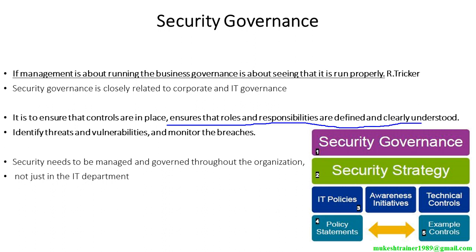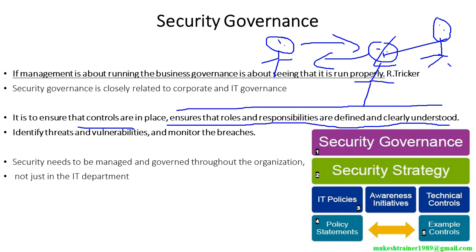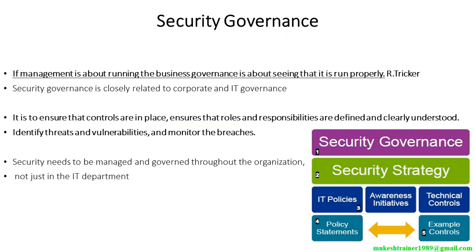In a company, there are people working — say two engineers. If a threat comes, one will blame the other, and the manager will blame both of them. So first of all, we have to make sure controls are there and roles and responsibilities are clearly defined and understood — everyone should know what their roles and responsibilities are, and what the managers have.